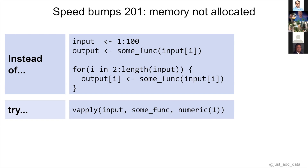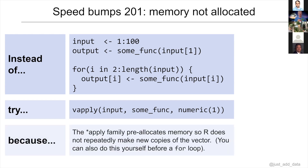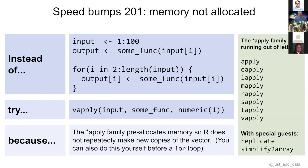There are a whole series of ways you can do this better. You can pre-allocate your vector before entering the for loop — that's totally valid. You can use members of the apply family, which pre-allocate memory so R doesn't repeatedly make new copies of the vector. There's a whole host of apply family functions — they're running out of letters — but go check them out, they might be applicable to your situation.